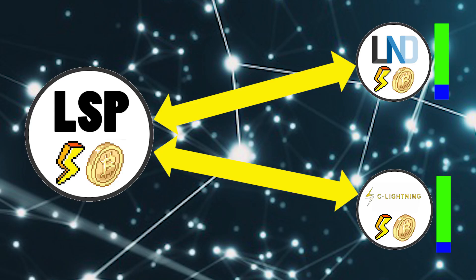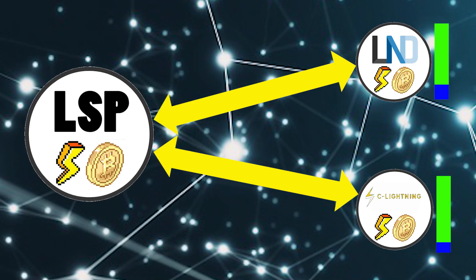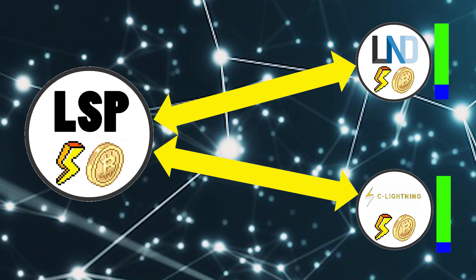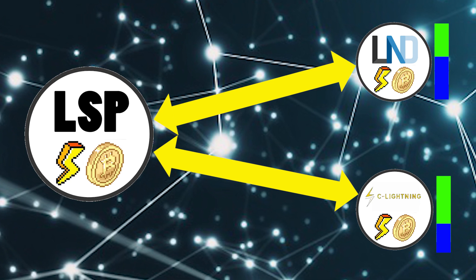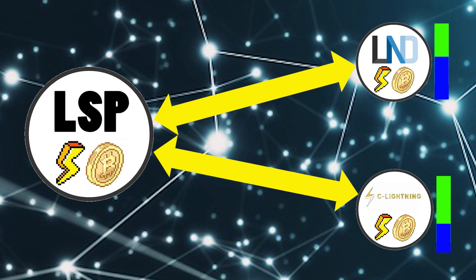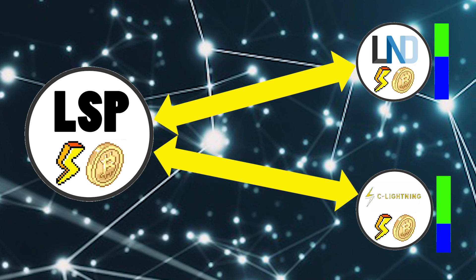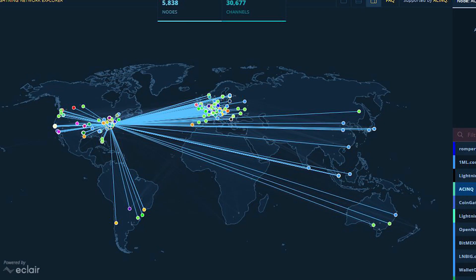Lightning Service Provider sounds similar to an internet service provider, and for good reason. A Lightning Service Provider's roles in the ecosystem are to guarantee uptime on their nodes, rebalance channels, and provide inbound liquidity. They are potentially the hubs providing services to those who need them.